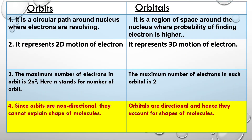Since orbits are non-directional, they cannot explain the shape of molecules. Whereas orbitals are directional and hence they can explain the shape of molecules.